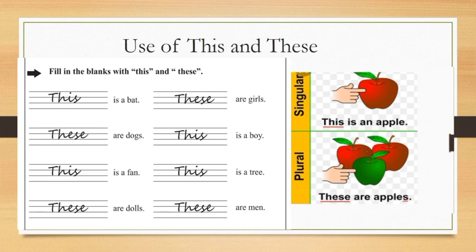First is dash is a bat. A bat is one, so you will use this. Then next, dash are girls. Now girls are more, so you will use these. And next, see, dash are dogs. Dogs are more, so you will use these. This is a boy. Next, what will you use? This is a fan. Dash is a tree. Then this, these are dolls, and these are men.